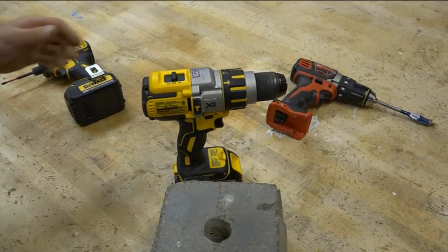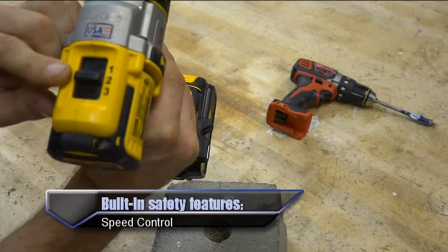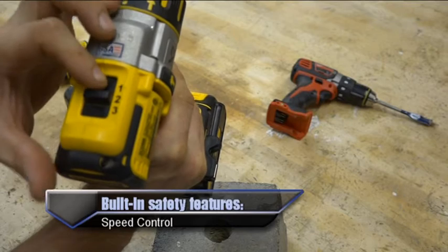Some drill guns include a speed setting feature: low, medium, and fast depending on screwing, using big drill bits, and the fast option for drilling with little bits.